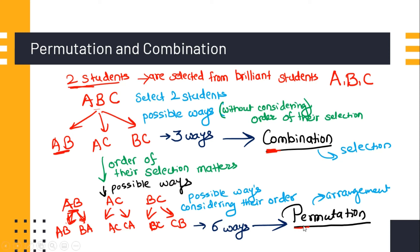In simple words, combination is the selection of elements from a group, giving possible ways without considering the order of selection. Permutation is the arrangement of elements, giving possible ways with consideration of the order of selection.